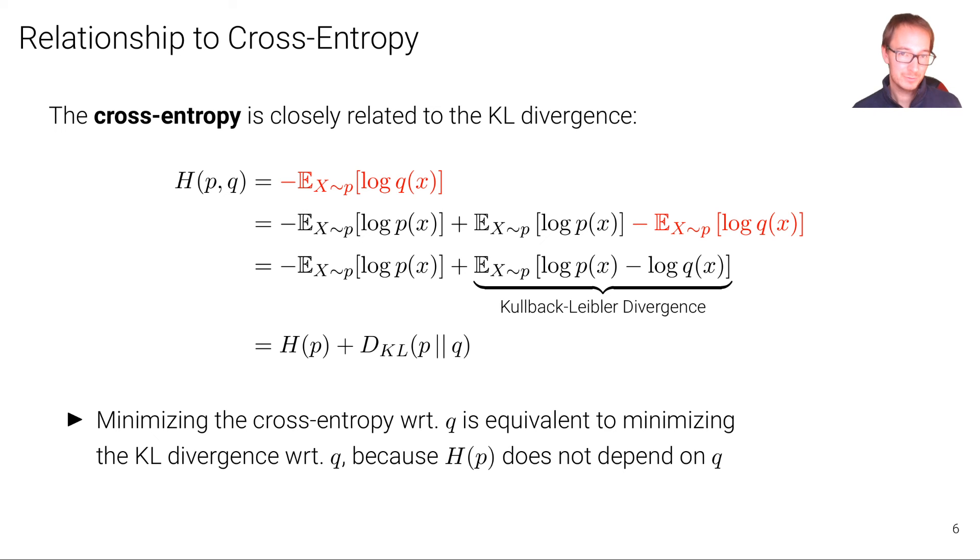There's also a close relationship to the so-called cross-entropy that's pervasive in machine learning and deep learning, and that we use often as a loss function. So the cross-entropy is denoted as H, and this is the expected value with X now drawn from P, but of the logarithm of Q. That's why it's a cross-entropy. So in contrast to the entropy now, we have different symbols here, P and Q. It's not the same.